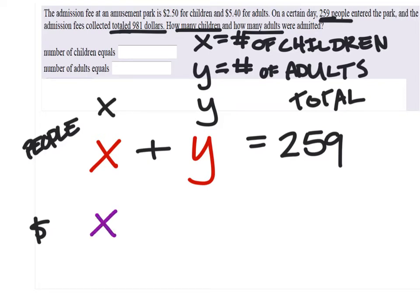So for children, it tells us right here that the cost for children was $2.50. So let me give myself some more space. I got $2.50 for every child. If I take $2.50 and multiply it by the number of children, that tells us how much money was collected from children's tickets.